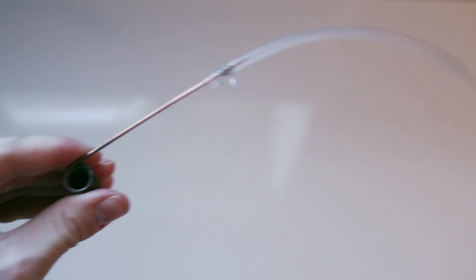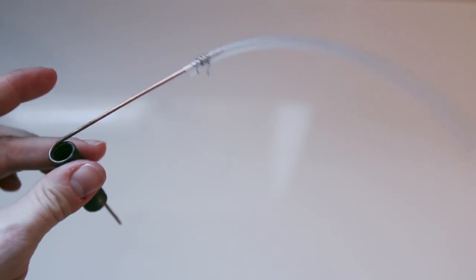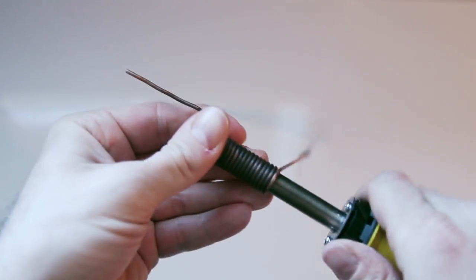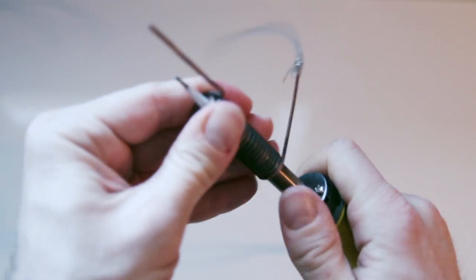It should be looking something like this. Now force that soldering iron through the coil. Use violence if needed.